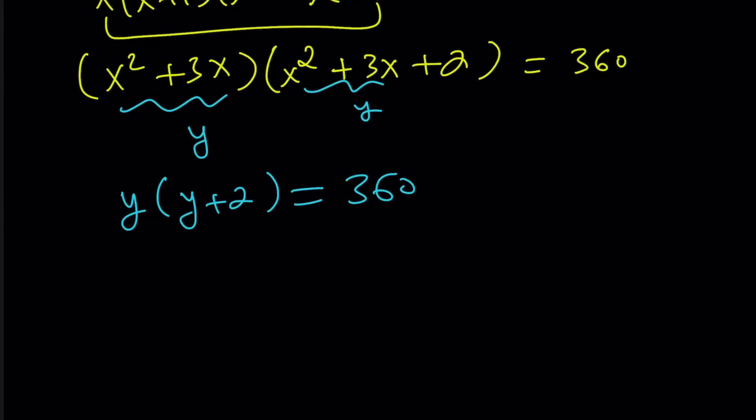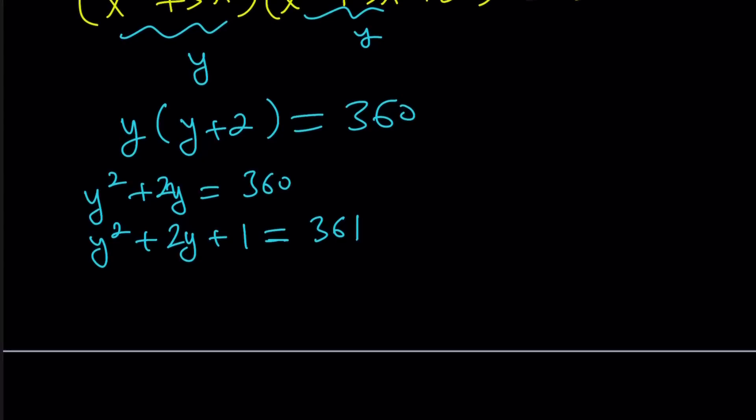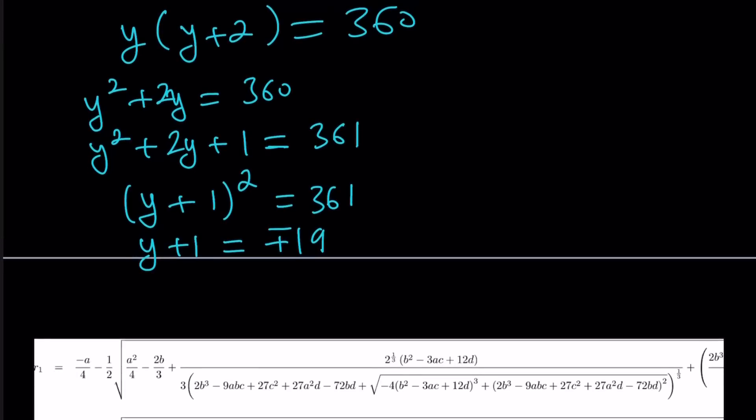First method is going to be distributing. Then we're going to add one to both sides. You'll see in a little bit why we're doing it. Now we did what is called completing the square. We have on the left hand side, y plus 1 quantity squared, and that's equal to 361. Notice that 361 is 19 squared, which is nice. So we can write this as plus minus 19. And from here, by setting the y values equal to 19 and negative 19, we get y equals 18 or y equals negative 20.